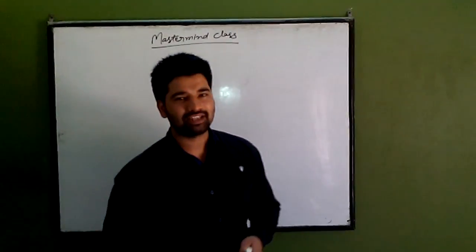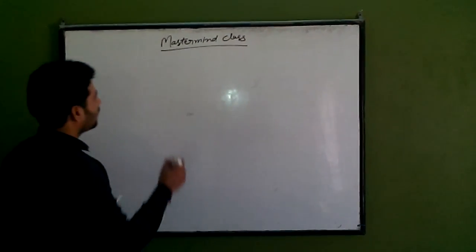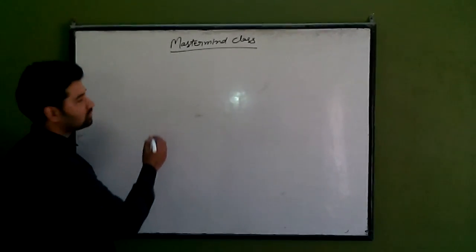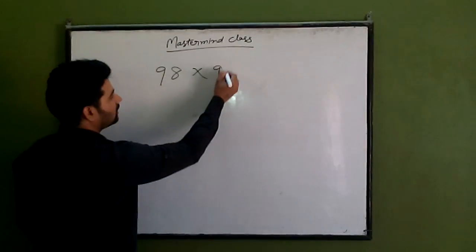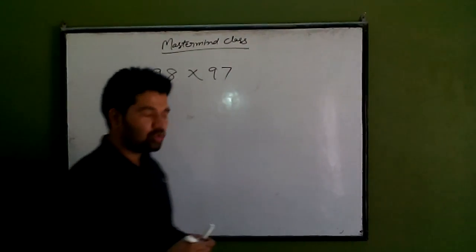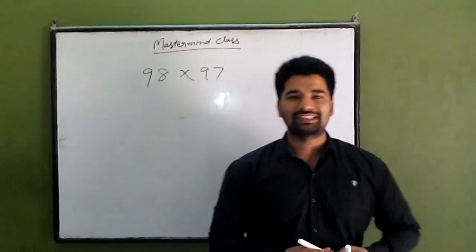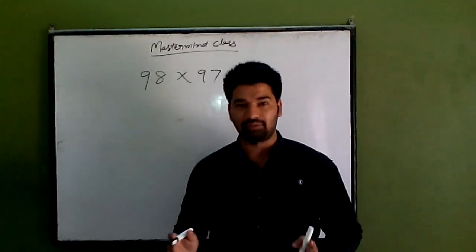Hello friends, myself Rajivs and today I am going to tell you 2D Multiplication, 98 x 97. How to multiply 98 x 97 in fastest time, in fastest shortest time.